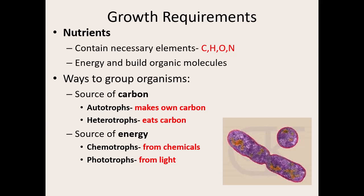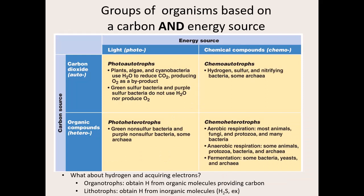Sources of energy: chemotrophs get all their energy from chemicals — as chemicals break down, it releases energy in the form of ATP. That's how we get our energy too: we eat food, it breaks down, chemicals release ATP. Phototrophs get all their energy from light. Based on how they get their carbon and energy, we can combine these terms to describe organisms.